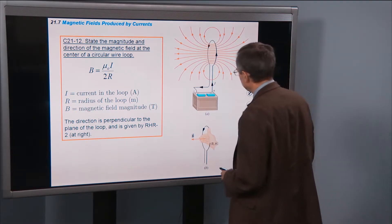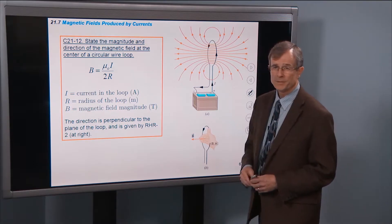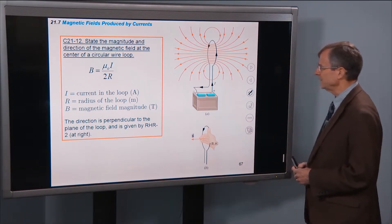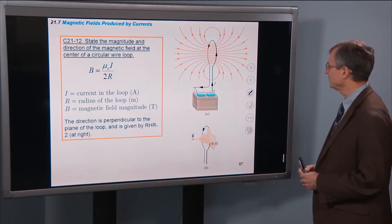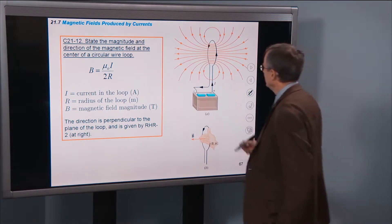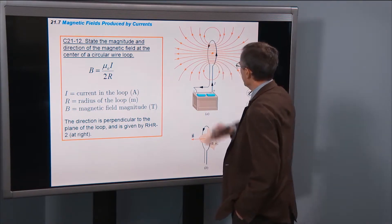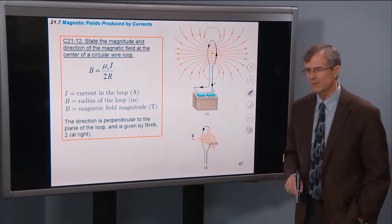All right, two more concepts, and this is the first of the two. State the magnitude and direction of the magnetic field at the center of a circular wire loop. So we're going to be interested in the magnetic field right smack here, right in the middle of that wire loop.